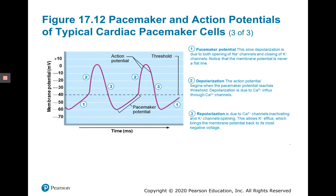Let's look at these steps again. We have the pacemaker potential — the spontaneous, slow depolarization due to both the opening of sodium channels and the closing of potassium channels. Then once we reach threshold at negative 40, we get depolarization and an action potential in the pacemaker cells. That causes calcium channels to open and calcium influx. Potassium channels then open, allowing potassium efflux and repolarization. So our steps are: spontaneous depolarization, reaching threshold, depolarization, and resetting — similar to skeletal muscle except for that prepotential.